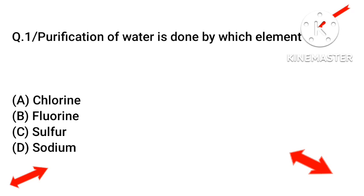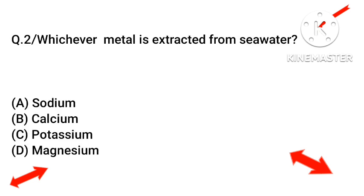Question number one: purification of water is done by which element? The right answer will be chlorine, option number A. Question number two: which metal is extracted from seawater? The right answer will be magnesium, option number D.